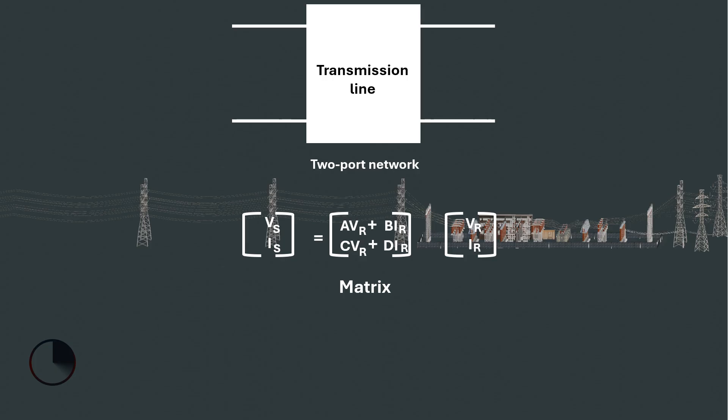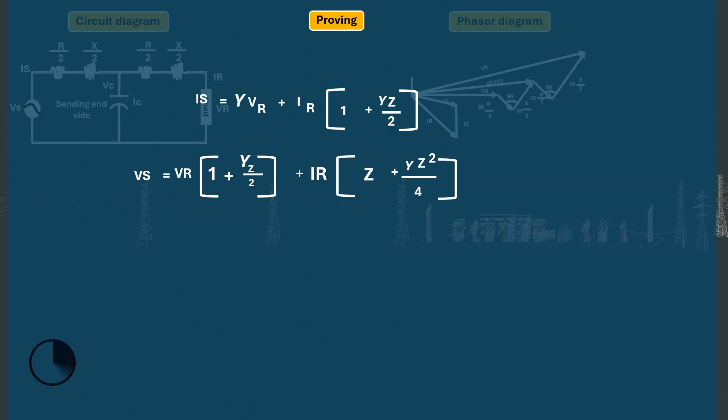Going back to the ABCD parameter matrices, the sending end voltage VS equals A times VR plus B times IR, and the sending end current IS equals C times VR plus D times IR. Comparing with our derived equations, A equals 1 plus Y times Z over 2, B equals Z plus Y times Z squared over 4, C equals Y (the admittance), and D equals 1 plus Y times Z over 2.